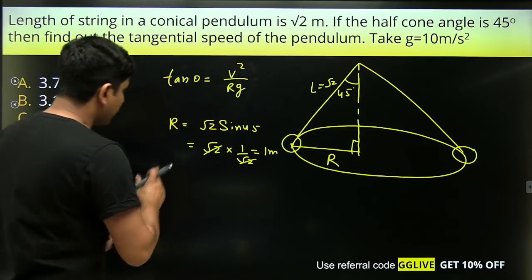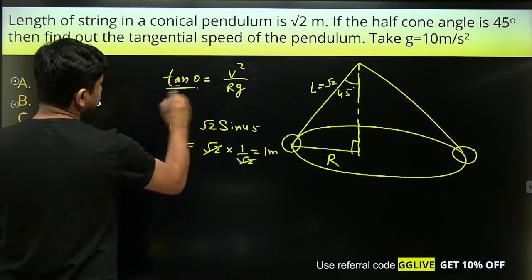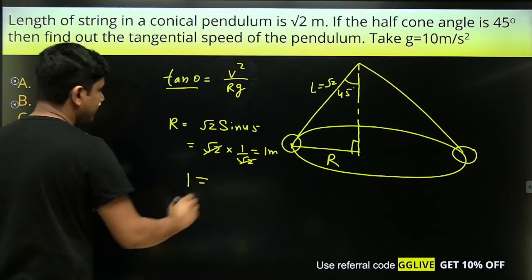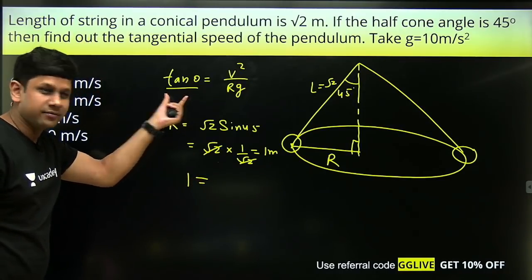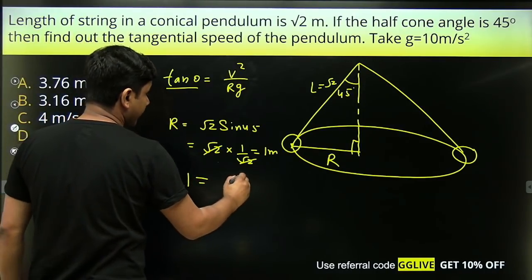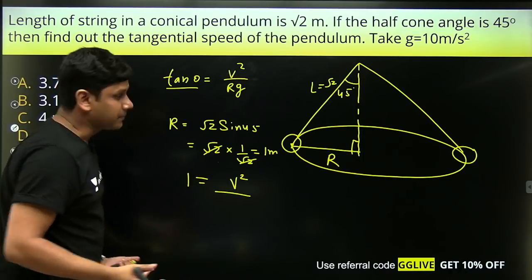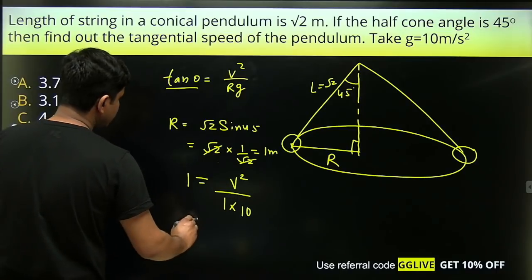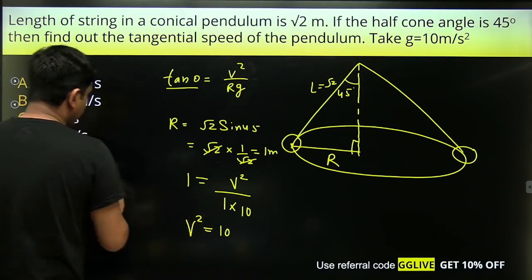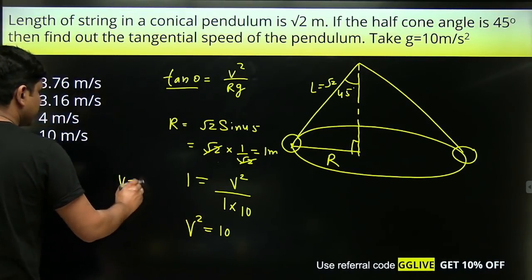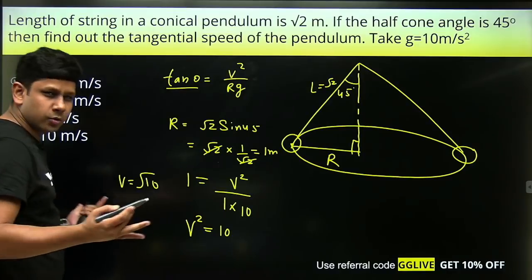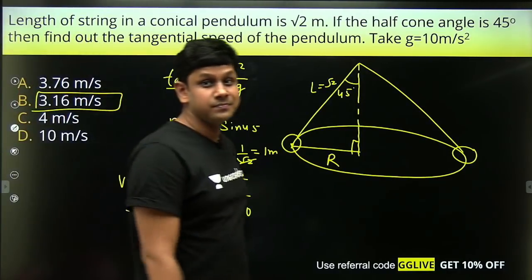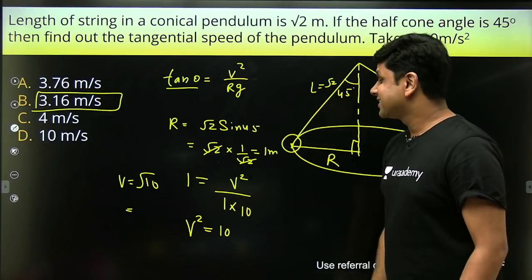From the triangle: radius r = L sinθ = √2 × sin45° = √2 × (1/√2) = 1 meter. Now applying tan45° = v²/(rg): 1 = v²/(1×10), so v² = 10, and v = √10 ≈ 3.16 m/s. That is your correct answer.